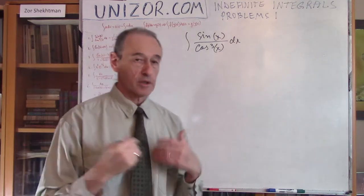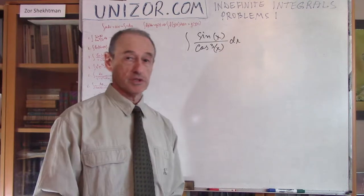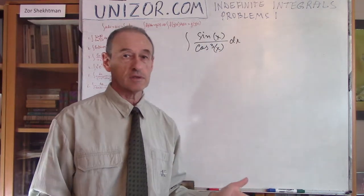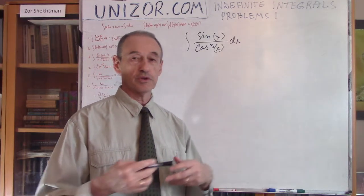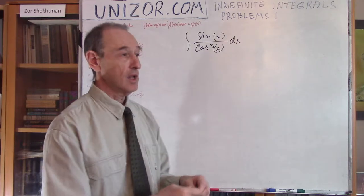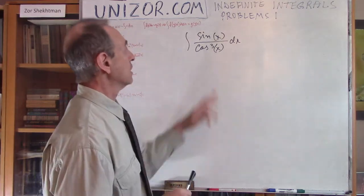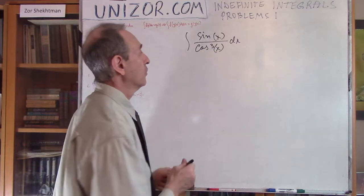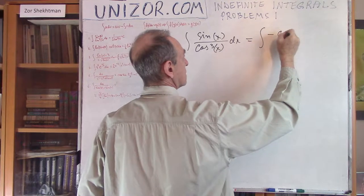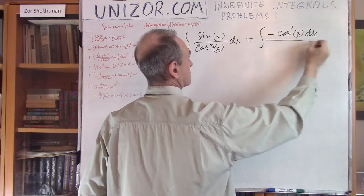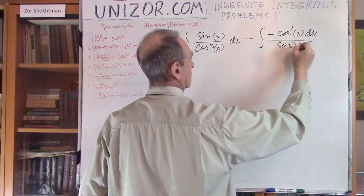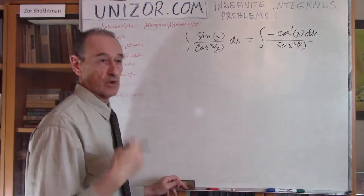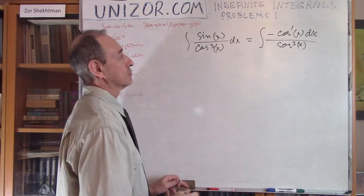What's creative about this particular example? You have to notice that sine and cosine are two different functions, so you cannot directly use a known antiderivative formula. However, you can notice that minus sine is the derivative of cosine. Which means you can rewrite it as minus the derivative of cosine of x, divided by cosine cubed of x. The derivative of cosine is minus sine, so the minus in front neutralizes the sine.